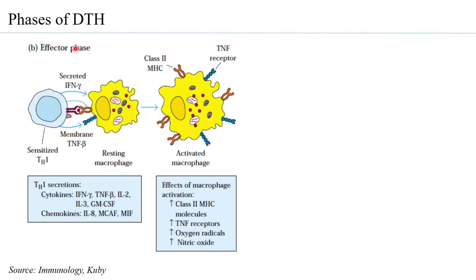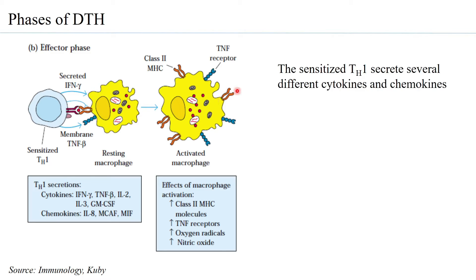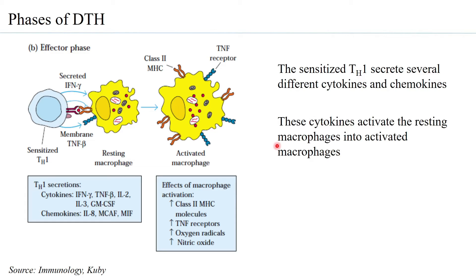The next phase is the effector phase. When sensitized TH1 cells again interact with an antigen — a macrophage containing intracellular bacteria that has presented the antigenic peptide on its surface — the sensitized T helper 1 cell interacts with the resting macrophage, stimulating it to become activated. The sensitized TH1 cells secrete several cytokines and chemokines. Key cytokines include gamma interferon, TNF-beta, IL-2, IL-3, and GM-CSF (granulocyte-monocyte colony-stimulating factor). Chemokines released include IL-8, MCF, and MIF.